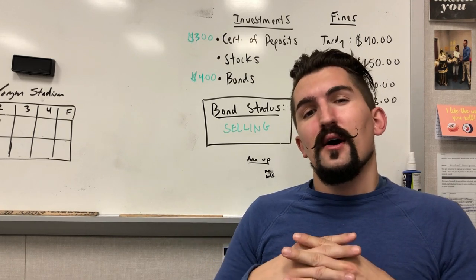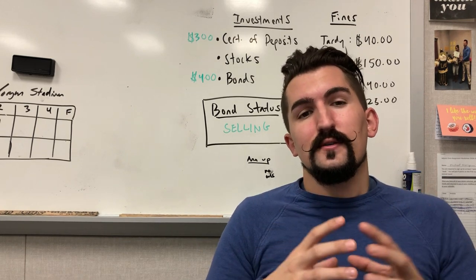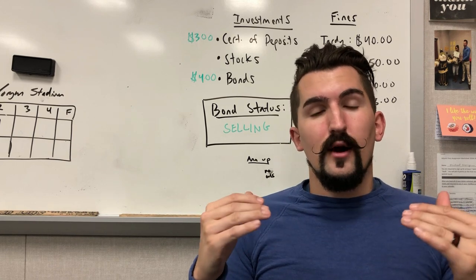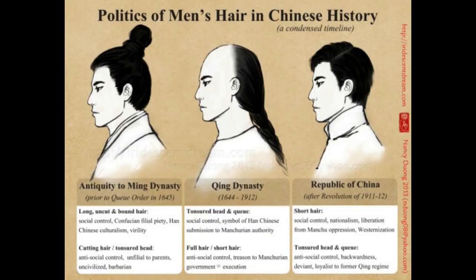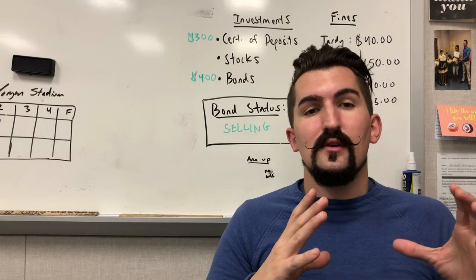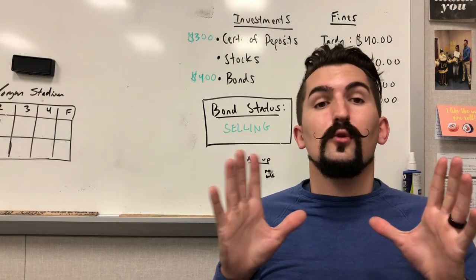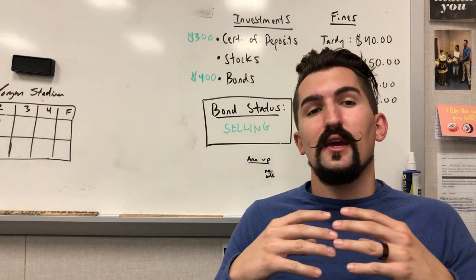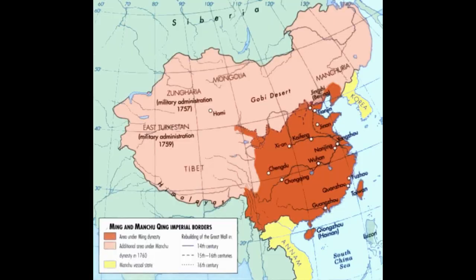However, there would be some oppressive ethnic policies, as the Qing required all Han men to wear the Manchu queue hairstyle — punishable by law and in some cases death — as well as banning intermarriage between Han people and the Manchu people of the north. Regardless, the Qing Dynasty would experience a vast expansion, bringing the borders of China to the largest they've ever been, including Tibet, parts of Central Asia, and expanding more to the north.